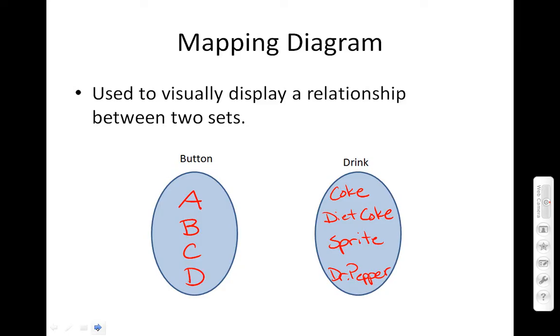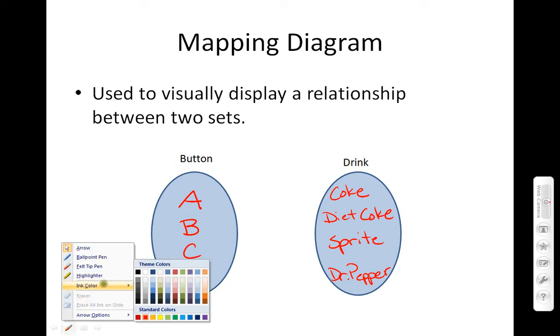So what I have here is kind of a mock-up of your standard Coke machine. A Coke machine can be easily represented with a mapping where we have what we call the input and then you have what's called the output.